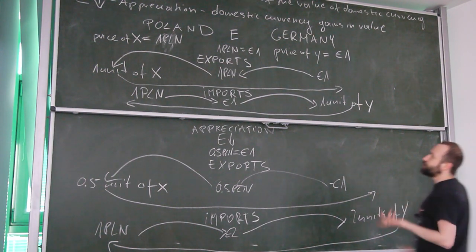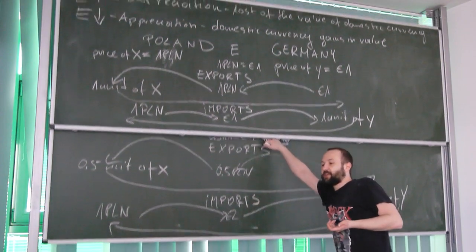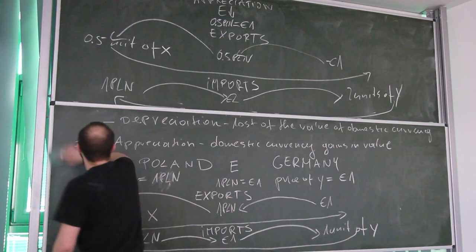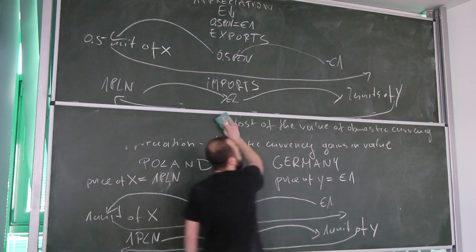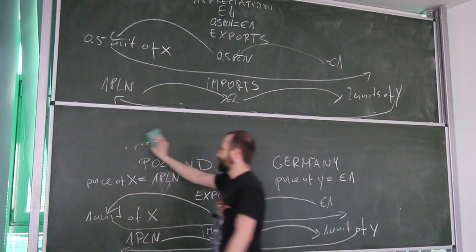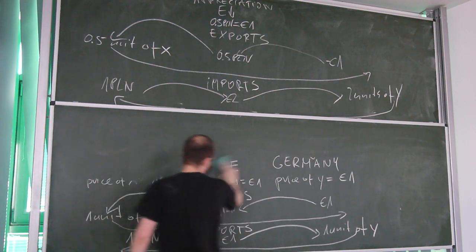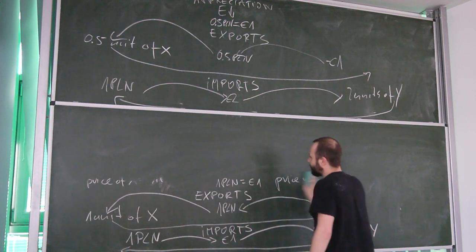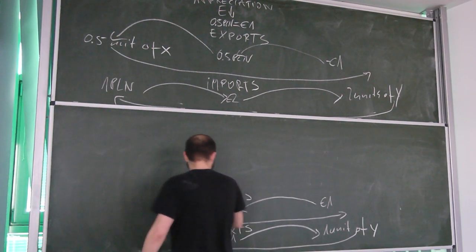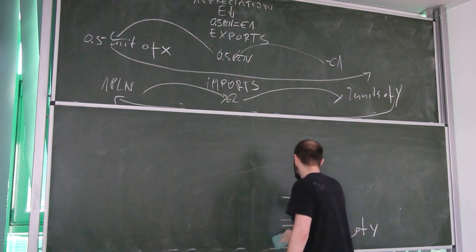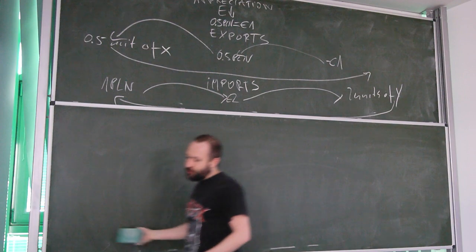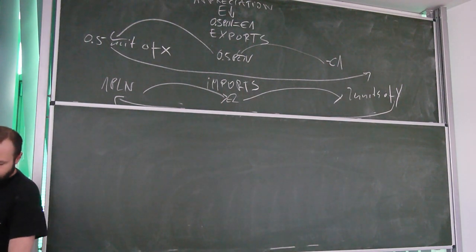The conclusion is: when the currency depreciates, the current account should improve, because exports go up and imports go down. When the currency appreciates, the current account should worsen, because exports go down and imports go up.